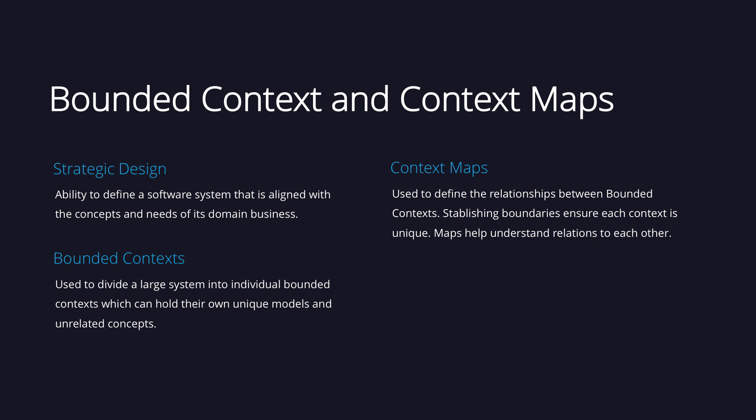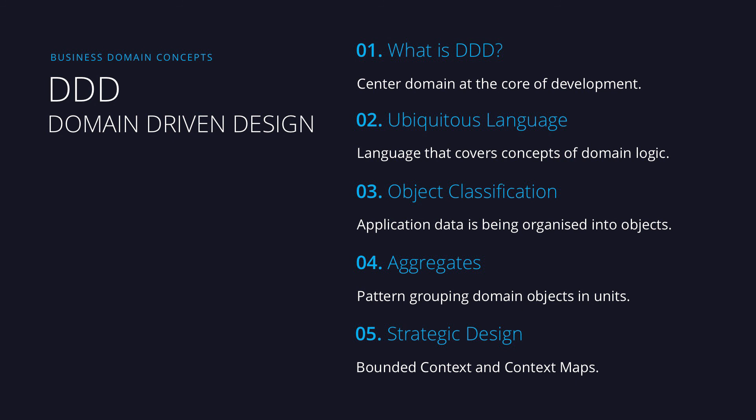Context maps establish the boundaries across bounded contexts and ensure each context is unique. The context map helps us to understand how they relate to each other. These tools allow domain experts and software engineers to establish a common ground for building domain models. They also ensure the terminology is understandable to all the team. Domain driven design tools prevent ambiguity in the language that is used across our software.